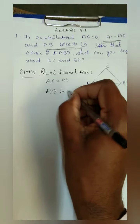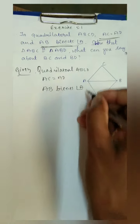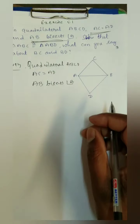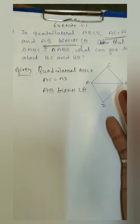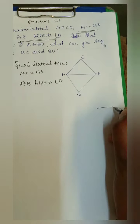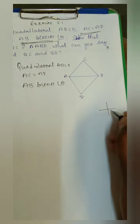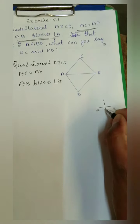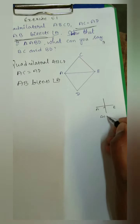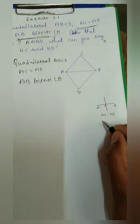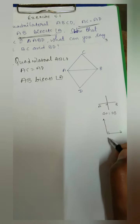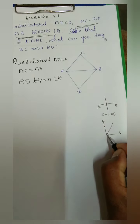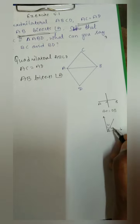Bisects means divides into two equal parts. For example, if a line segment is bisected at point O, then AO equals OB. Similarly, if an angle of 90 degrees is bisected, it is divided into 45 degrees and 45 degrees. That is the meaning of bisect.